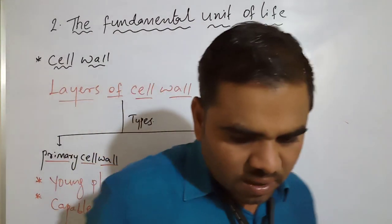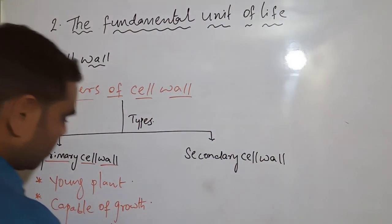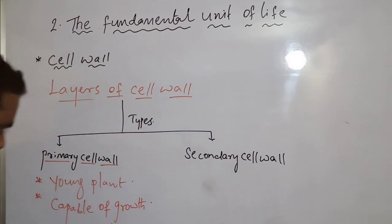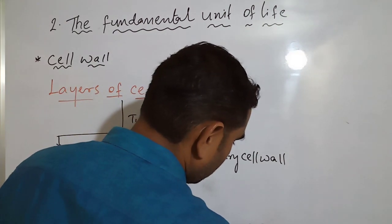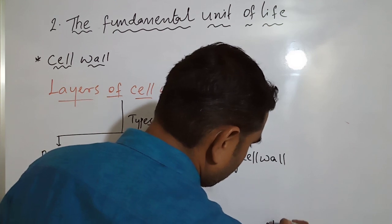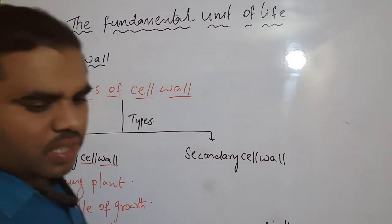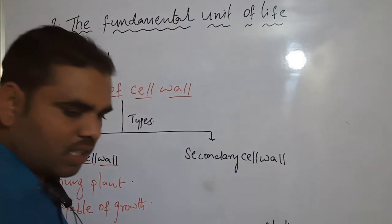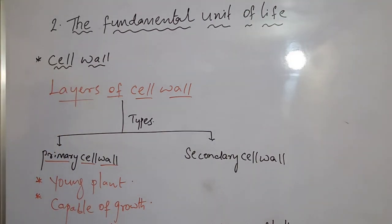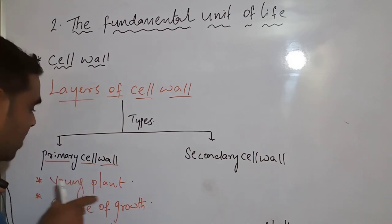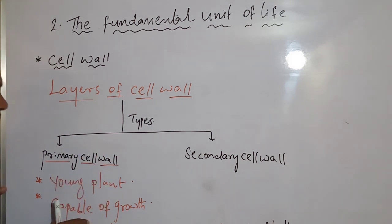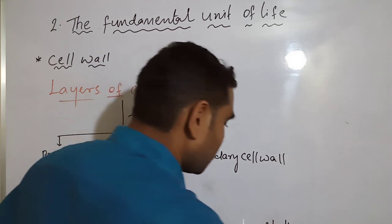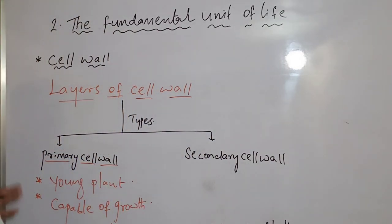The primary cell wall is composed of a loose network of cellulose microfibrils. So for primary cell wall: present in young plant cells, capable of growth, and composed of a loose network of cellulose microfibrils.